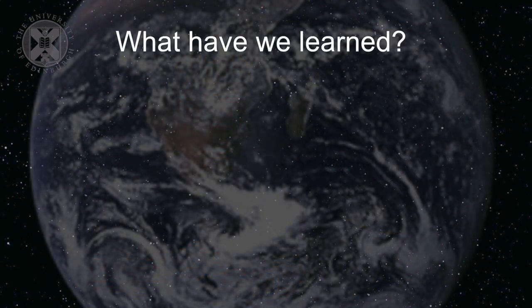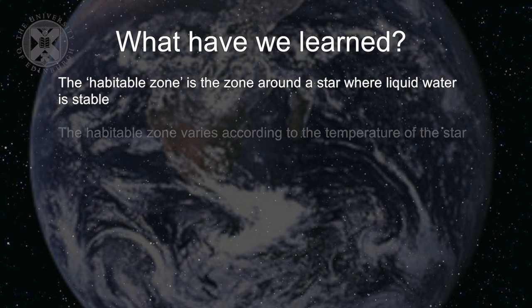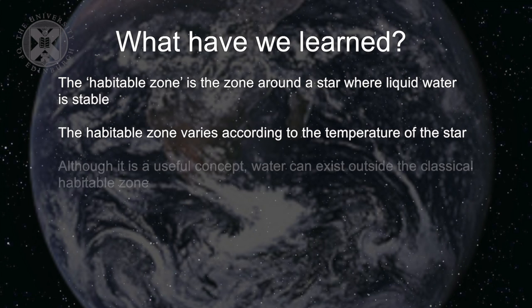What have we learned in this lecture? Well, we've learned that the habitable zone is a zone around a star where liquid water is stable on a planetary surface. We've learned that the habitable zone will of course vary according to the temperature of the star and although it's a useful concept, water can exist outside the classic habitable zone, for example, on small moons such as Europa.